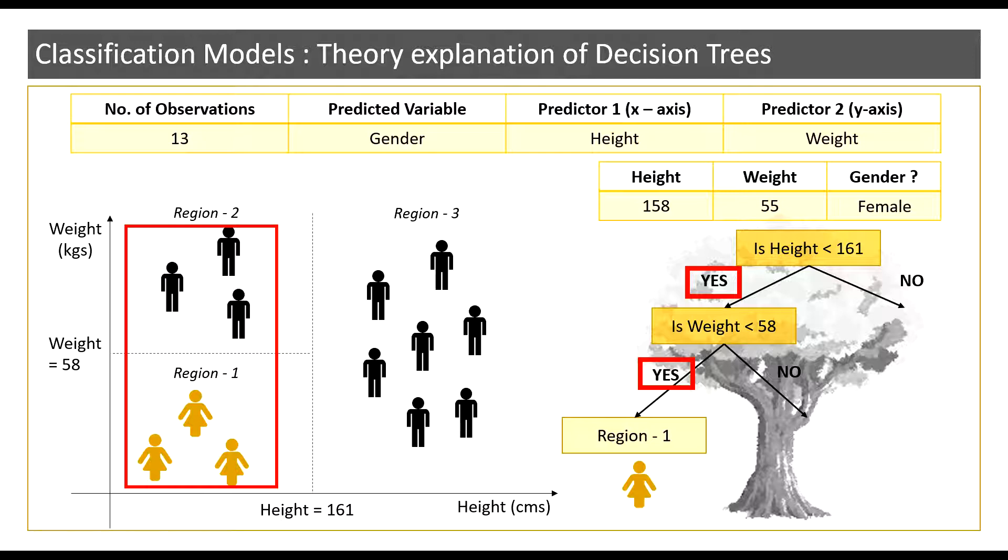If the height and weight values had been different then it would have pointed to the observations that lie in the other regions, regions 2 and 3, where the gender predicted would have then been male.